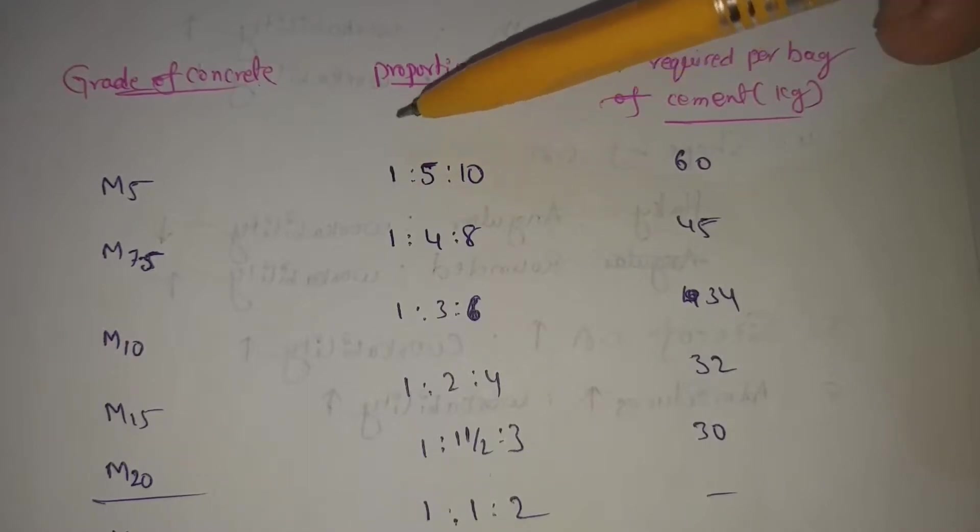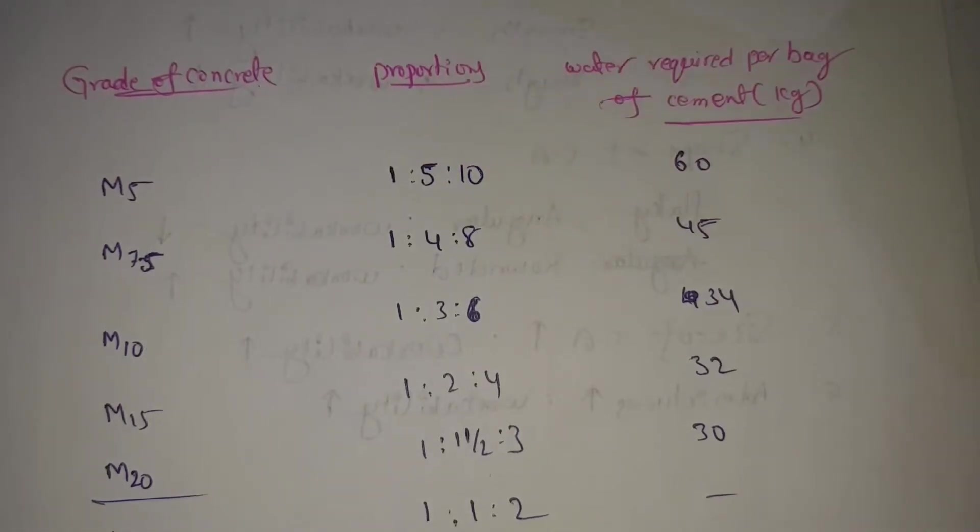1 is cement, 5 is sand, 10 is gravel. Cement, sand, gravel. So, this is the mix proportion. This is 60 liters required.